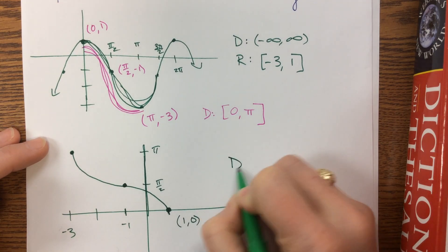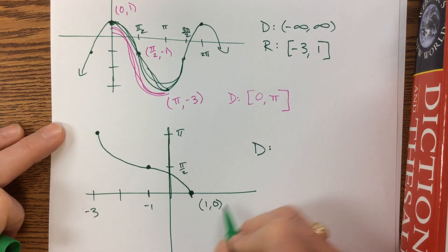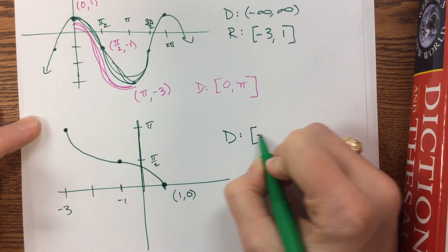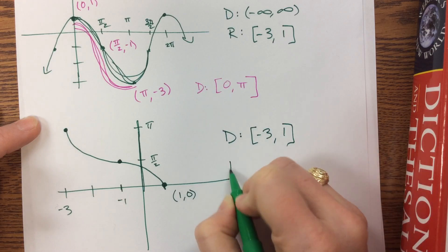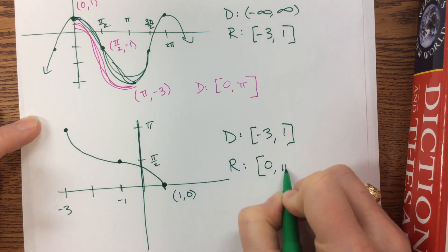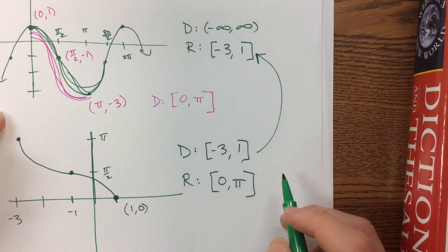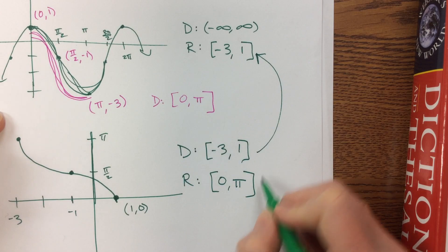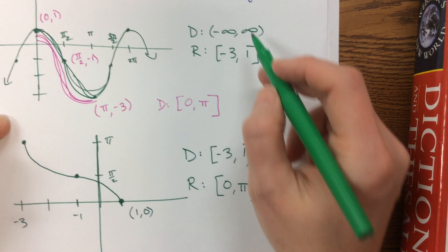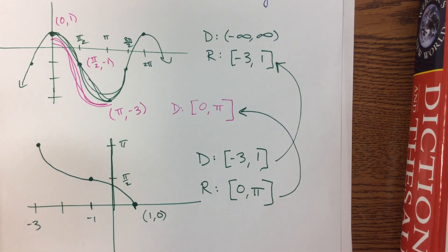The domain of this inverse function goes from negative 3 to positive 1. The range now goes from 0 to π. You'll notice the domain of the inverse needed to be the range of the original, and it was. The range of the inverse should be the domain of the original — but if I used the full unrestricted domain, it would not be a function. So I have to use the restricted domain.